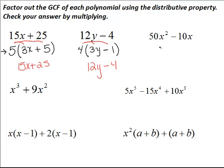Looking at the third expression: 50x squared minus 10x. We notice first that there's an x term present in both, so we can factor out the x term with the smallest exponent. Comparing x squared and x, the smallest exponent is x. Looking at the numbers, 10 is the greatest common factor of 50 and 10, so we'll factor out 10x.